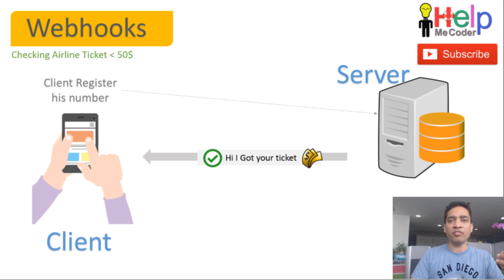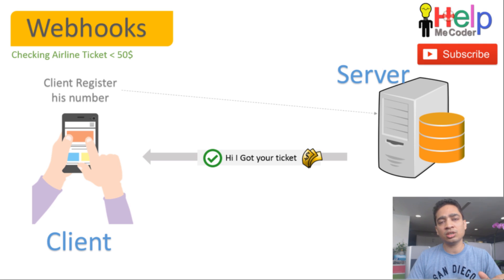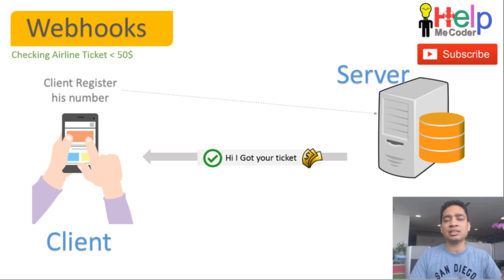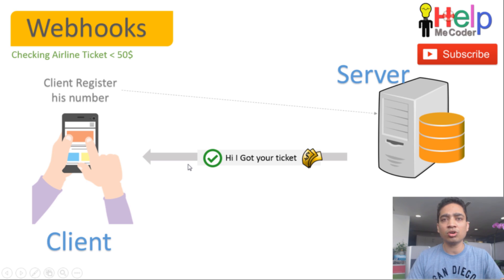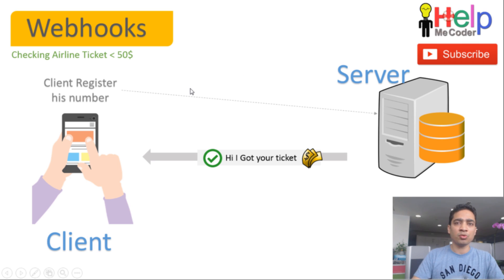If we follow the same methodology using webhooks, how do we do that? I don't need to tell the server again and again. Instead, I will register my number with the server. I will tell the airline company: here is my number, keep it with yourself. Once you have a ticket which is less than $50, just give me a call back. So the client registers the number on the server. Once the server has the ticket, it will send you the message: I got you your ticket. You don't have to keep polling the server — the server keeps looking for you, and when it has that item, it sends you the response. This approach is what we call a webhook.